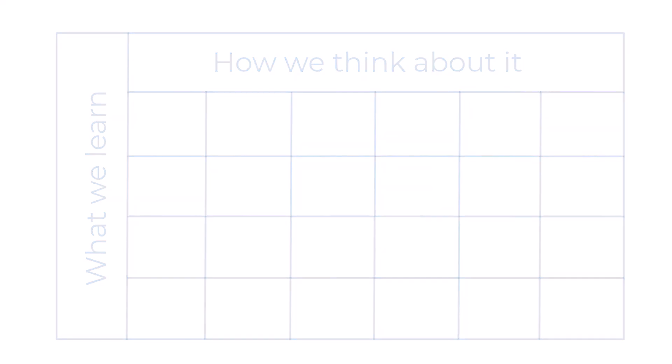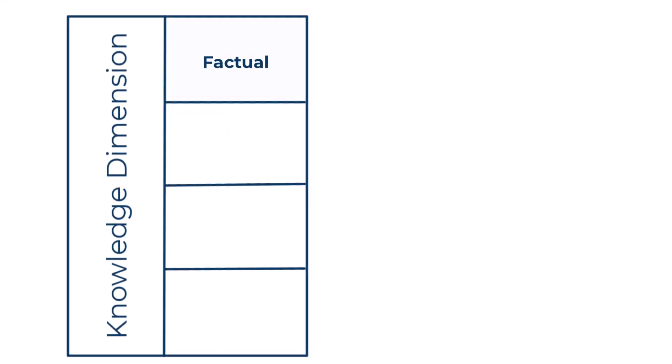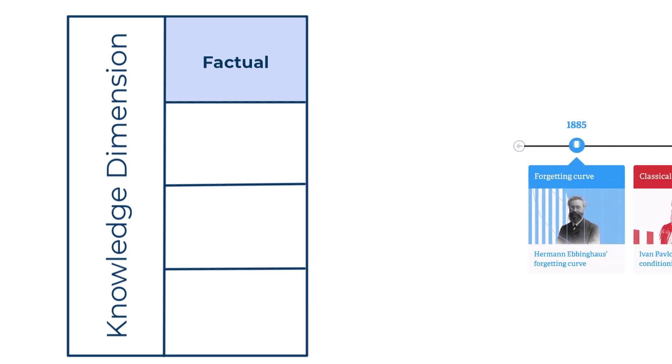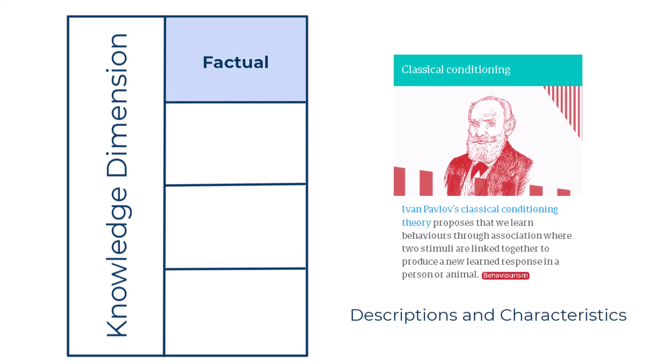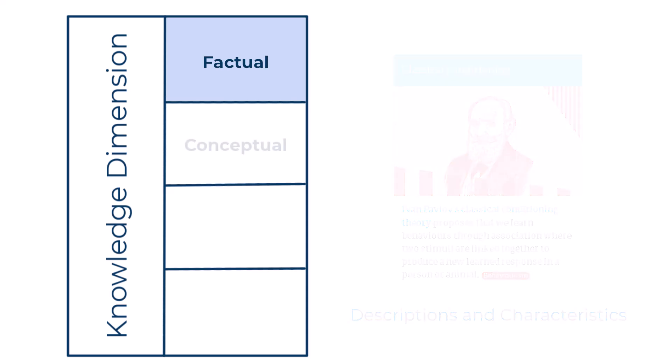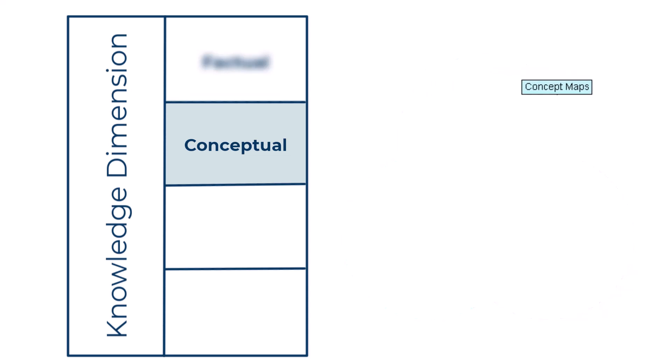Please refer to the knowledge dimension handout for a more detailed description of each type and subtype. The first type is factual knowledge. This is described as the basic elements students must know to be acquainted with a discipline or solve problems within it. The second type is conceptual knowledge, generally described as interrelationships among the basic elements within a larger structure that enable them to function together.